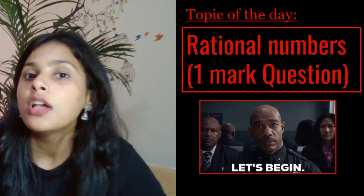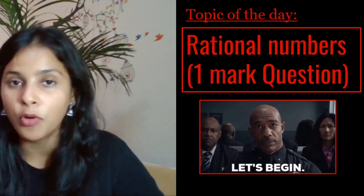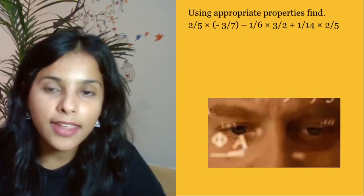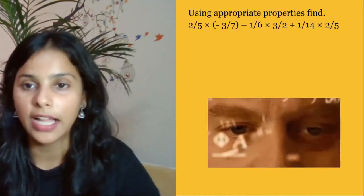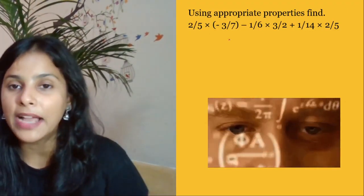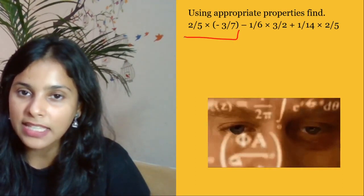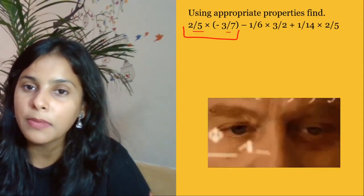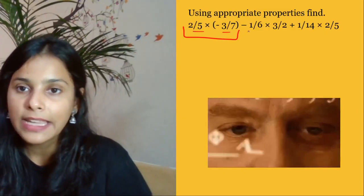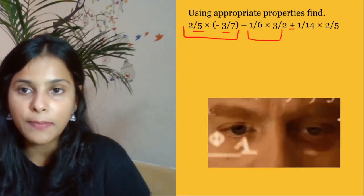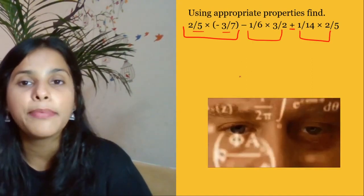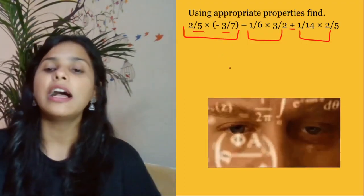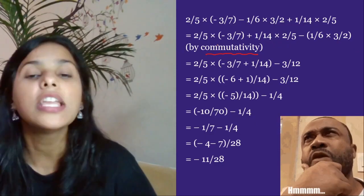This whole session, go through to the end because all the questions are very important. First question on your screen: what is the appropriate property used to give this solution? See what is 2/5 multiplied by -3/7. Kids, you understand this — you are going to pair here. What do you see? A minus sign — this is the pair. The other pair will have a plus sign. You can change the order creatively.